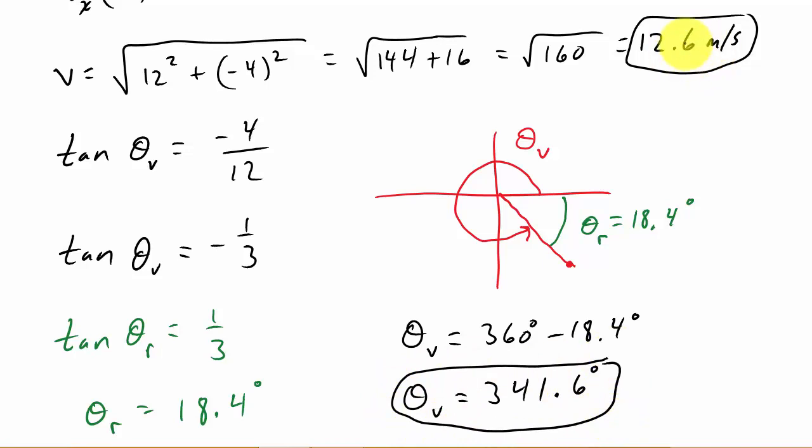And yeah, you know, if you wanted to you could have your theta sub v equal to negative 18.4 degrees. That would be acceptable also. I just like to go ahead and give the positive angle. But this would be correct also. All right. So, you know, I'm going to do one on acceleration. Check it out. It's a separate video.